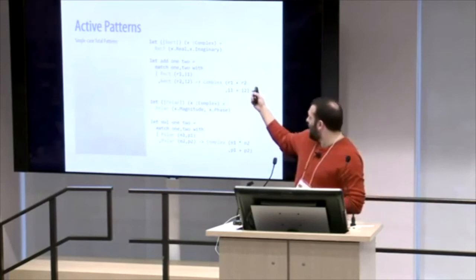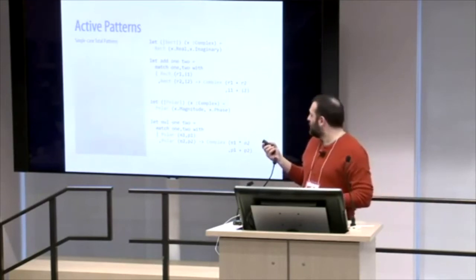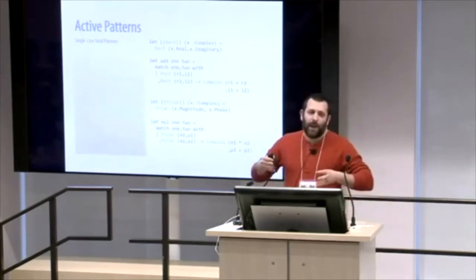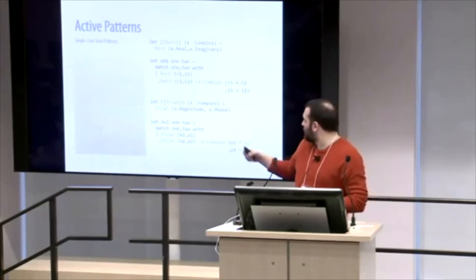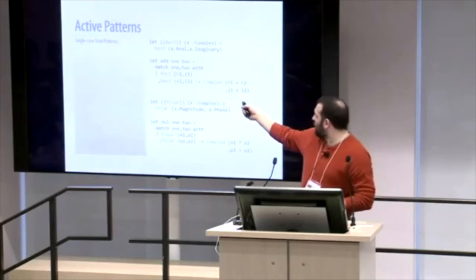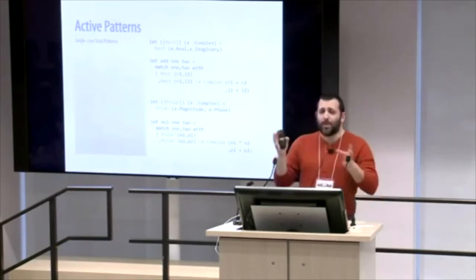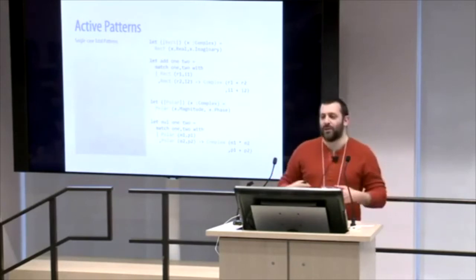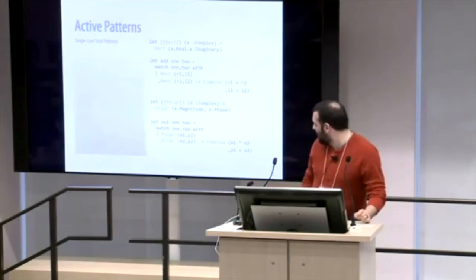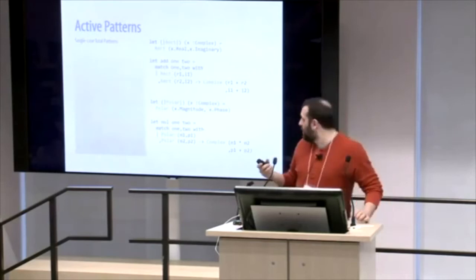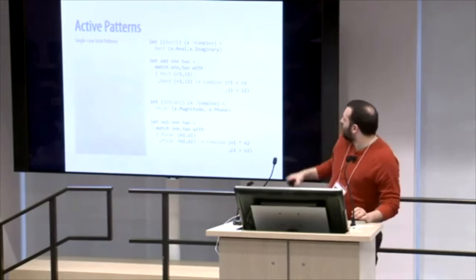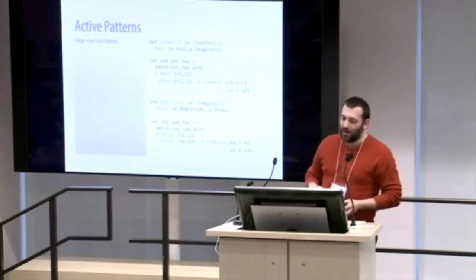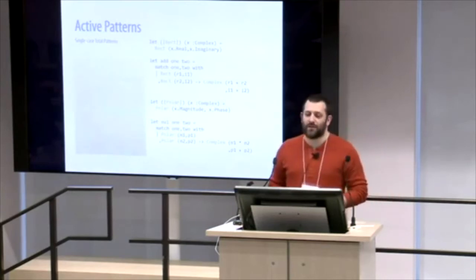Looking at an add statement, we take in two complex numbers but shape them into rectangular coordinates to work on adding them. The rect identifier gets added into the available match identifiers in the global space. We can do the same thing for polar, looking at phase and magnitude. Our underlying complex value hasn't changed — we don't touch that. We're just providing a different way of looking at it. In the wild, truthfully, single-case total patterns don't come up all that often, but they do come up every now and again.